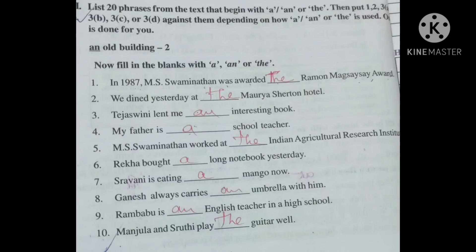Tejaswini lent me an interesting book. An before vowels. My father is a school teacher. Consonant sound takes a. M.S. Swaminathan worked at the Indian Agricultural Research Institute. Special names take the.